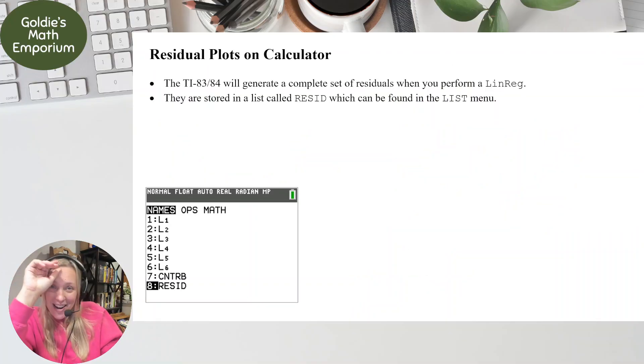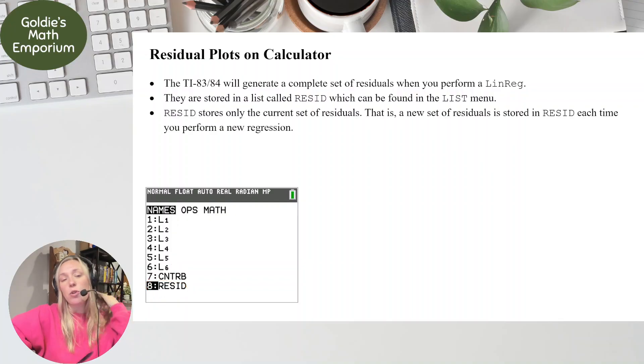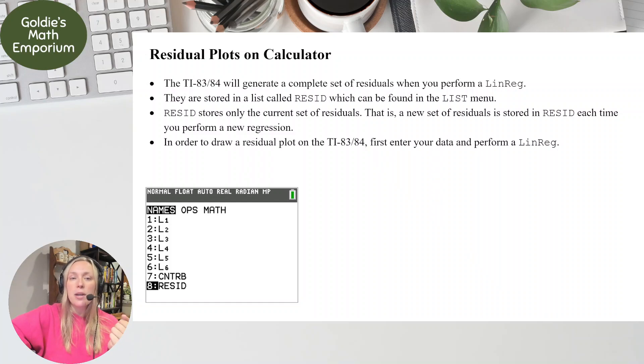If you did want to make a residual plot on your calculator, the TI-84s, 83s, it will actually generate residuals automatically when you perform a LIN-REG. So when you run LIN-REG, whether it's number four or number eight underneath your calculations, when you run those, it'll automatically create all the residuals for you, and it's stored in a list called RESID, which can be found under the list menu. So I have it brought up here on the screen. It's number eight underneath all of the names for your lists. So RESID stores the current set of residuals, so every time you run a LIN-REG, a new set of residuals is stored in RESID.